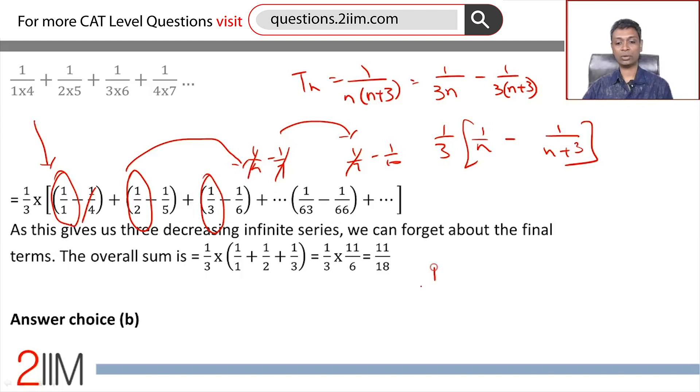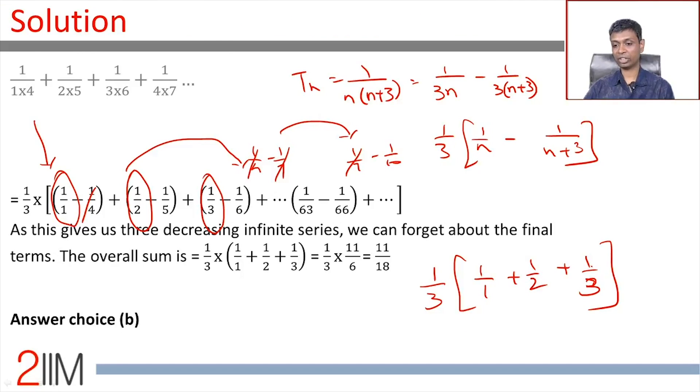We are effectively looking at 1/3 times (1/1 + 1/2 + 1/3). The LCM here is 6. So this is 1/3 times (6/6 + 3/6 + 2/6), or 1/3 of 11/6, which is 11/18.